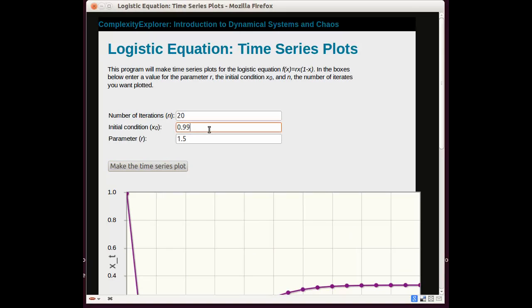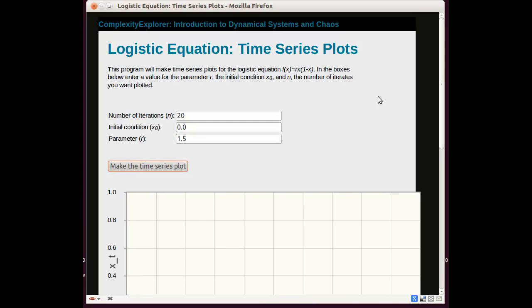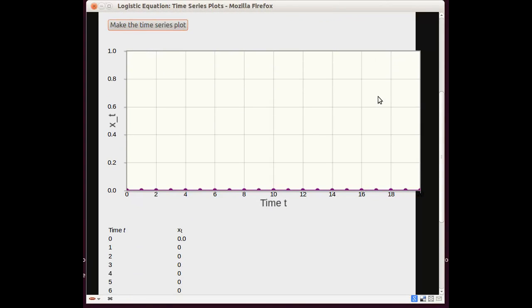Lastly, I'm going to try an initial condition of 0. In this case, there are no rabbits to start off with. And sure enough, there remain no rabbits. So if there are no rabbits on the island, there will be no rabbits. There will be no rabbits on the island next year or next generation. So not surprising that 0 is a fixed point. But perhaps comforting to see it on this numerical example.